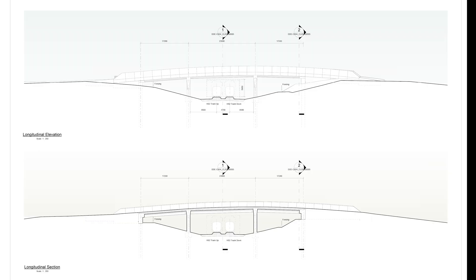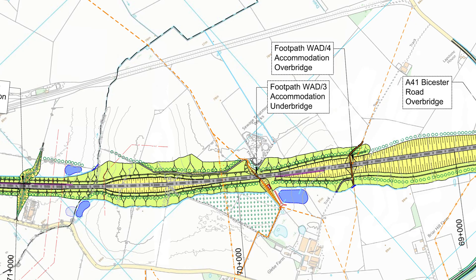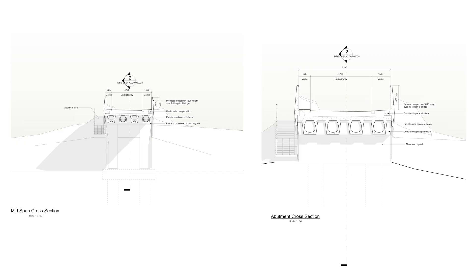The first structure we come to is WAD4 Accommodation Overbridge. The footpath that uses this bridge goes from Blackgrove Road, passes Glebe Farm, and then to Wadston. The design of this bridge is very similar to others along the route.